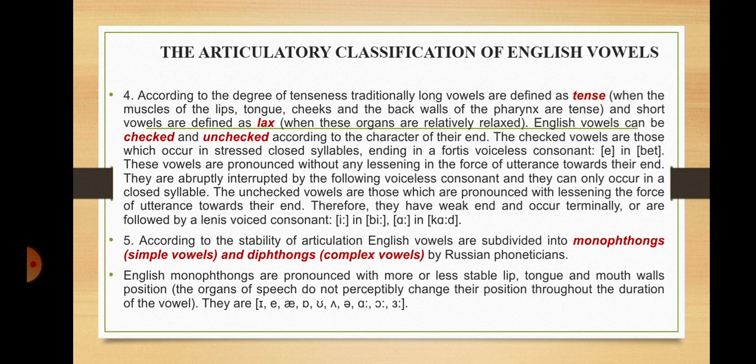According to the stability of articulation, English vowels are subdivided into monophthongs (simple vowels) and diphthongs or complex vowels, by Russian phoneticians. English monophthongs are pronounced with more or less stable lip, tongue, and mouth wall position — the organs of speech do not perceptibly change their position throughout the duration of the vowel. They are: i, e, æ, ɑ, ɒ, u, ʌ, ə, ɜ, ɔ.